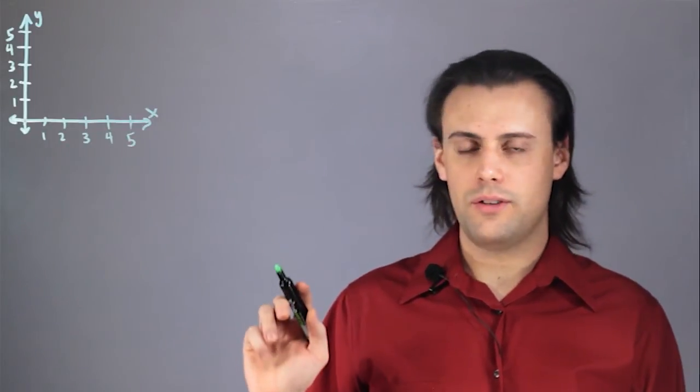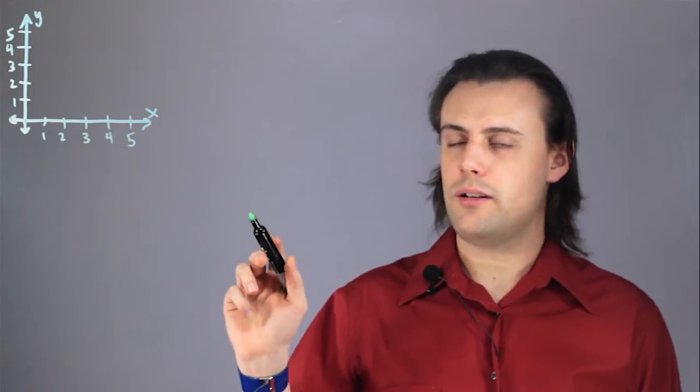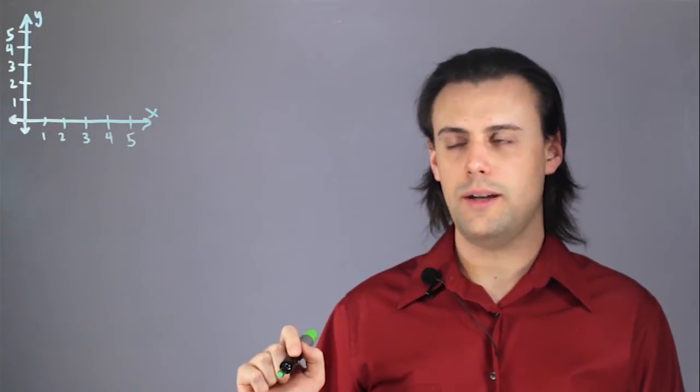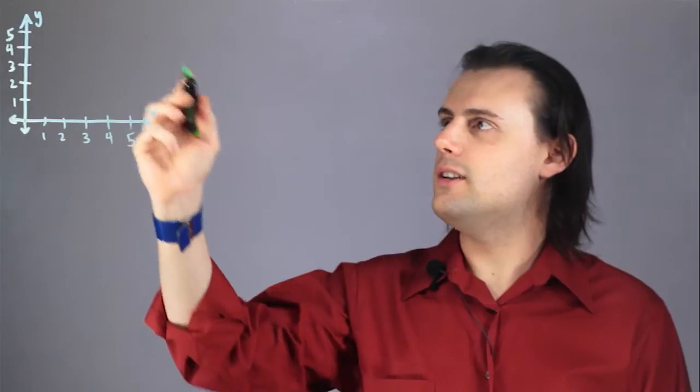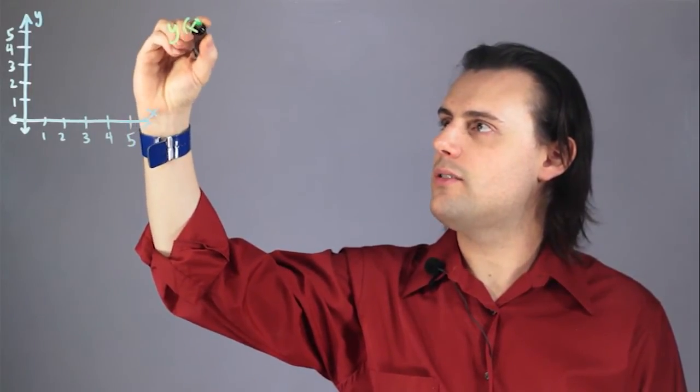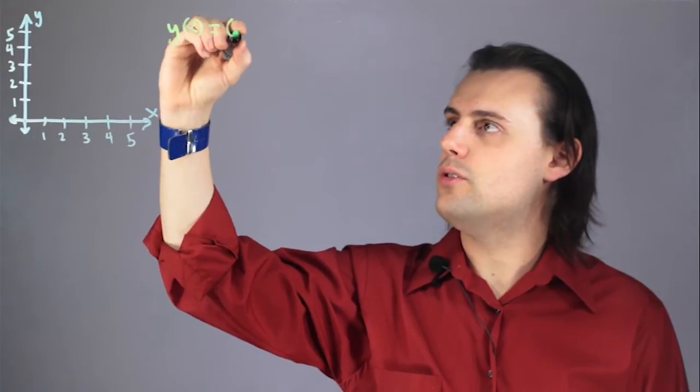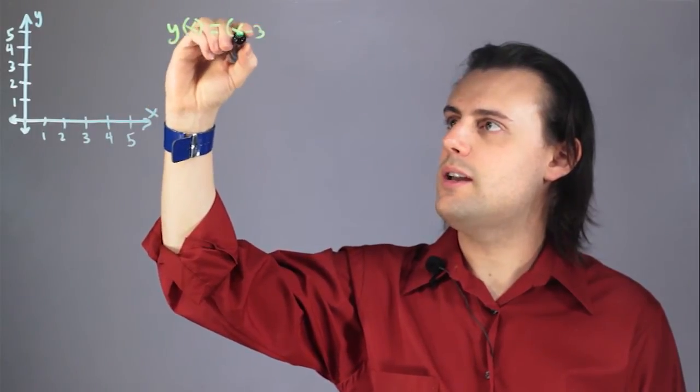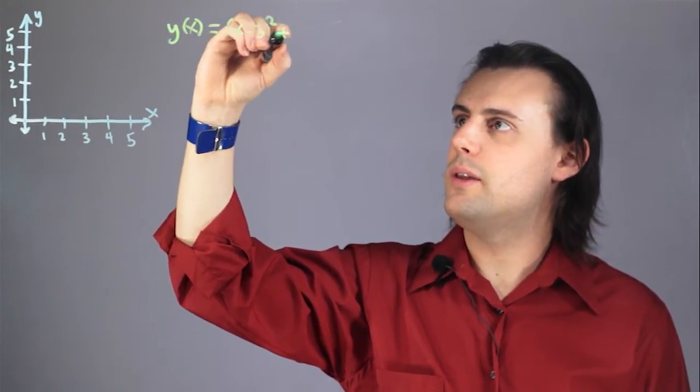A line of symmetry is a point about which a function is symmetric. I'm going to consider as an example a function y of x is equal to x minus 3 squared plus 2.